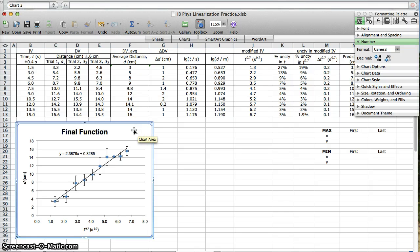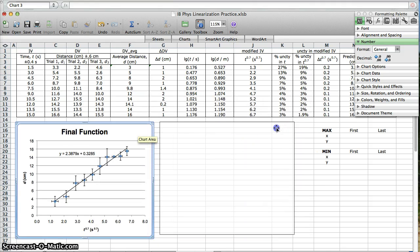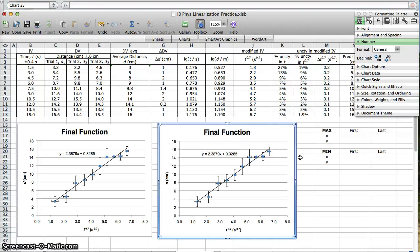Okay. First step. You make a copy of this final function graph. You click and drag, and while your mouse is still holding down, you push on the keyboard option if you have a Mac, or I think it's control with a PC, and then you let go. Still holding option. That makes a copy.